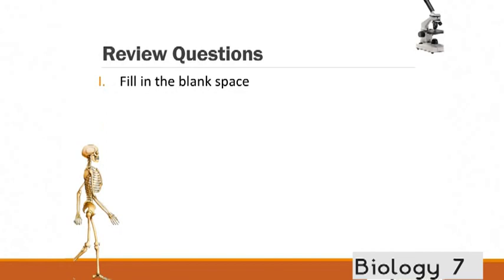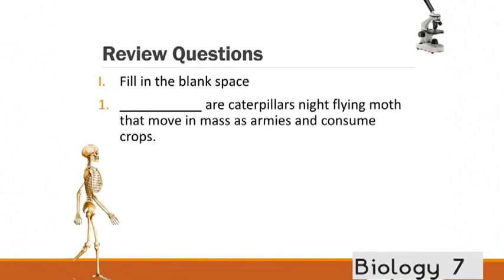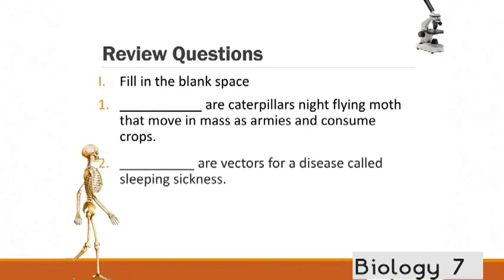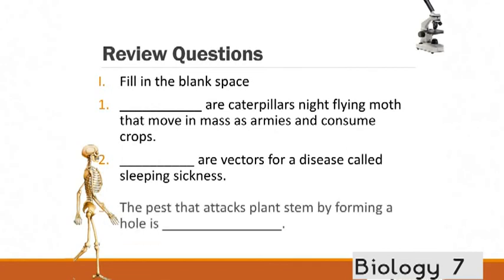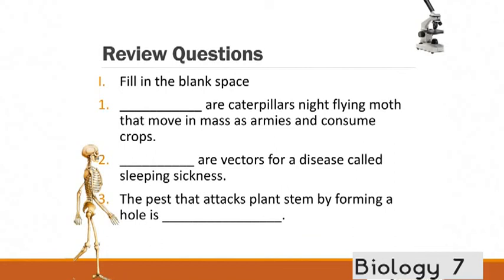Let's do a quick review here. What are the caterpillars that move in mass armies? What are the vectors for the disease called the sleeping sickness? And what's the pest that attacks the plant stem by forming a hole? The correct answer is army worm for the caterpillars of the night flying moth. Tsetse flies are the vectors of the disease of the sleeping sickness. And the maize stalk borer is the pest that attacks the plant stem.